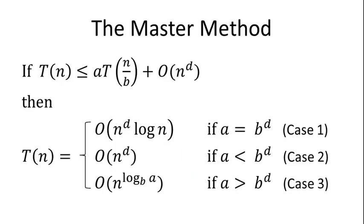The master method takes as input recurrences of a particular format — recurrences parameterized by three different constants: A, B, and D. A refers to the number of recursive calls, or the number of subproblems that get solved. B is the factor by which the subproblem size is smaller than the original problem size, and D is the exponent in the running time of the work done outside of the recursive calls.